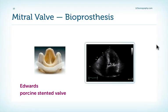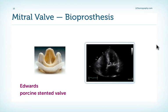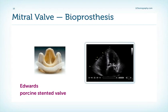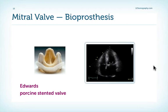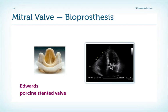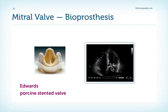Here is another prosthetic mitral valve — however, this time not a mechanical but a biological valve. This is a stented valve. You can see one strut here, and another strut here; the third strut is out of the field of view or out of plane, so we do not see it. We see that there is tissue in between these two struts. Note that the struts protrude into the left ventricle, and also that we do not see any shadowing of the left atrium.